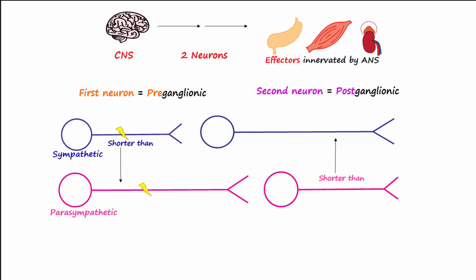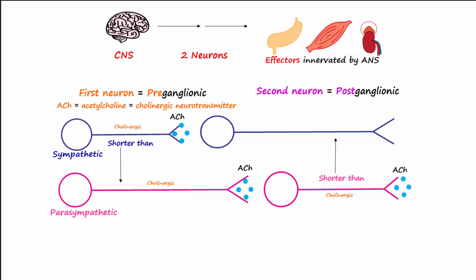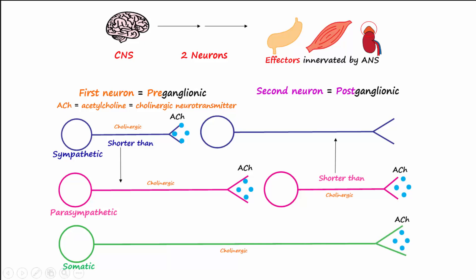The action potential travels down the axon of the preganglionic neuron and reaches the axon terminal where neurotransmitters are released. All preganglionic neurons of the ANS are cholinergic, meaning they make and release acetylcholine, abbreviated ACh, as their neurotransmitter. Postganglionic neurons of the parasympathetic nervous system are also cholinergic, as are somatic motor neurons that innervate skeletal muscle. The postganglionic neuron of the sympathetic nervous system is called an adrenergic neuron, meaning it makes and releases norepinephrine.